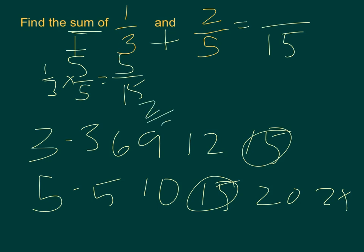Now we have 2/5 times something equals something over 15. 5 times what? 5 times 3 gives us 15. Whatever you do to the bottom, you do to the top. 2 times 3 is 6. 6/15.